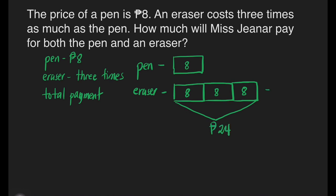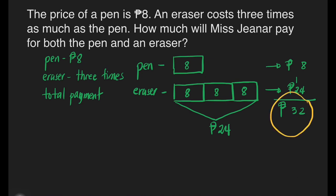So our eraser is 24 pesos and the pen is 8 pesos. All we need to do is add the prices of these 2 items. 8 plus 4 is equal to 12 — carry 1 at the top of the 2. 1 plus 2 is equal to 3. The total payment that Ms. Jinar will pay is 32 pesos for both the pen and eraser.